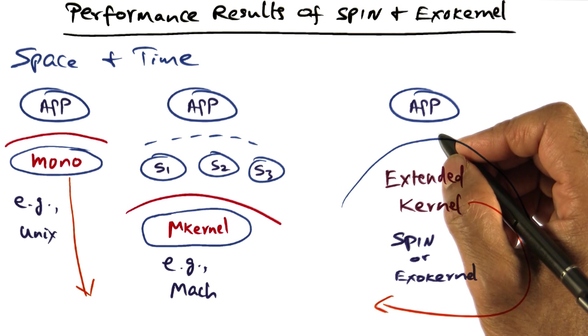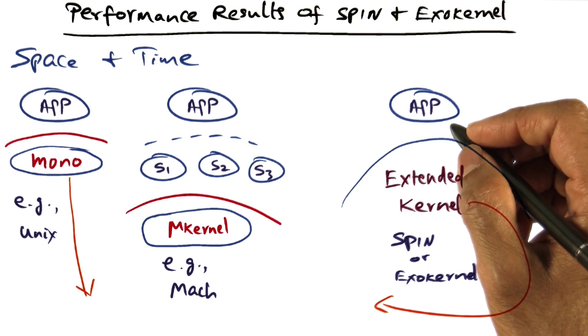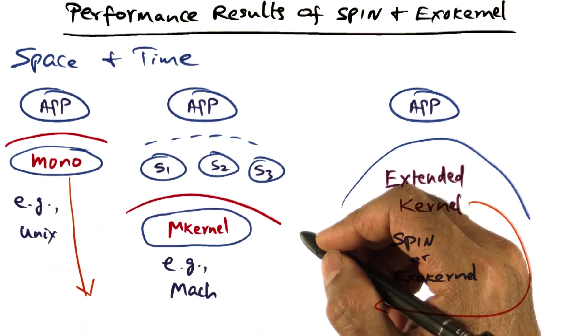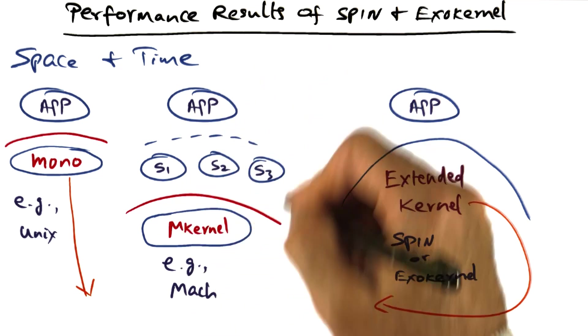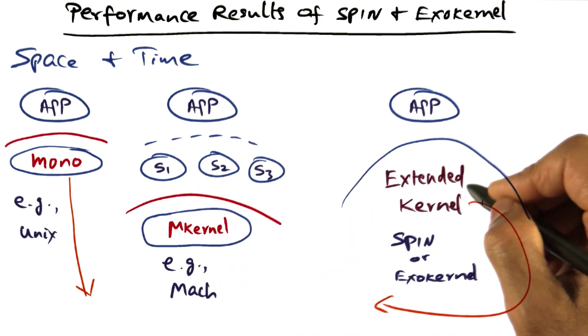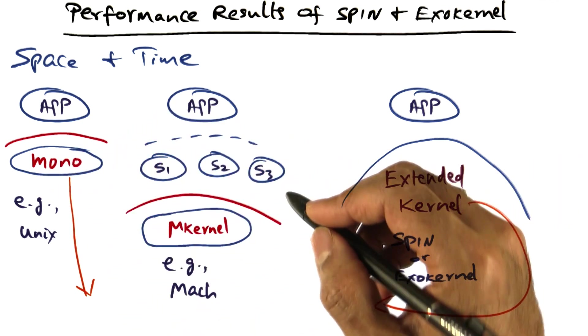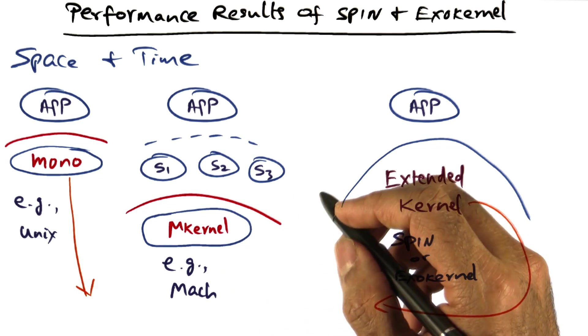Remember that spin and exokernel were done in the early to mid 90s. For spin and exokernel, the competition is a monolithic operating system and a microkernel based operating system. And the competition at that time for both spin and exokernel was Unix as a monolithic example and Mach from CMU as a microkernel example.